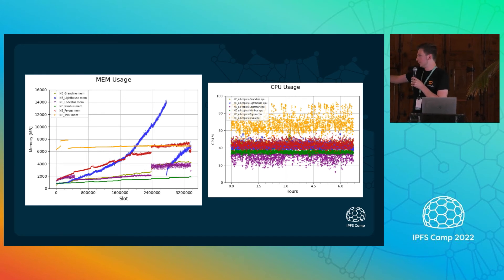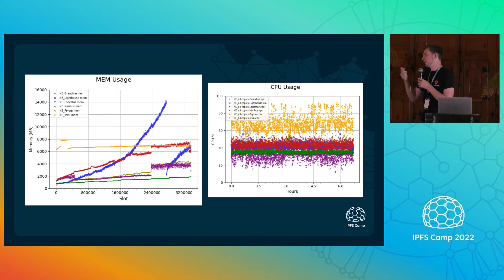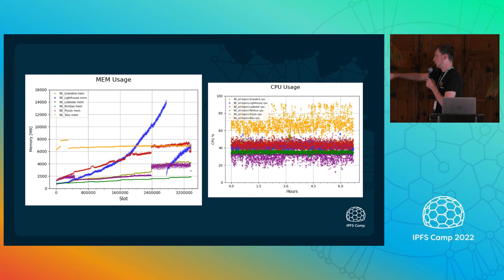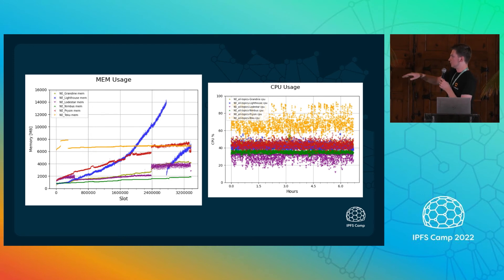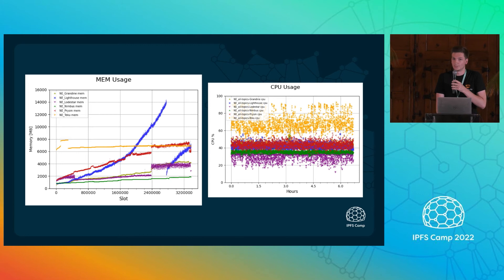This is a comparison done by Migalabs of Ethereum consensus clients. We have one in Nim, in Go, in Rust, in Java, and in JavaScript. On the left you'll find the memory usage — we have the green lines and we are at the very bottom, which is where you want to be. On the right you have the CPU usage — we are not at the very bottom, but almost. Apparently the JavaScript one is even better in terms of CPU. Very good performances, obviously.